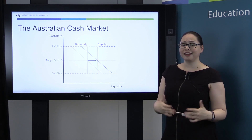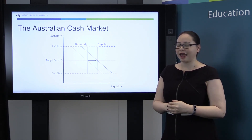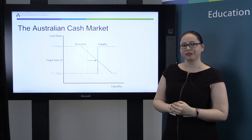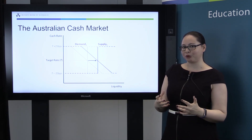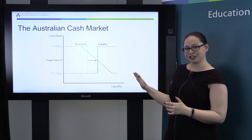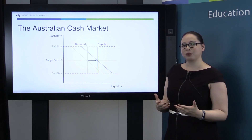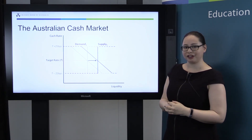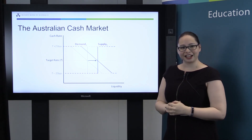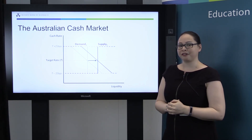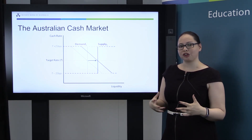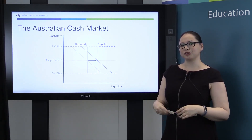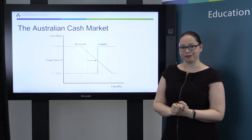Demand can and does move around in this market, and if demand moves, the Reserve Bank will respond by altering supply. So for example, if demand were to increase in this market, the Reserve Bank would respond by increasing the supply of cash as well, to keep that cash rate near our target. This is exactly what happened during the financial crisis — banks wanted to hold a bit of extra cash as precautionary balances, and the Reserve Bank made sure to supply some extra cash to the market.